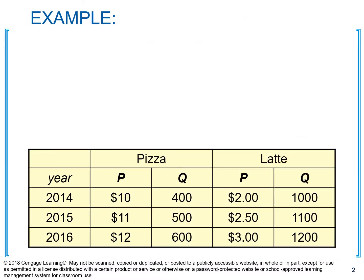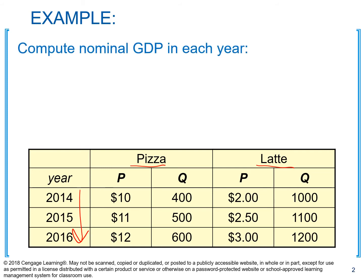Let's suppose we have a very simple economy. In our economy, we produce only two goods: pizza and latte. We have prices and quantities over the course of three years. What we're going to do first is calculate nominal GDP. Nominal GDP is easy to calculate — for example, for year 2014.